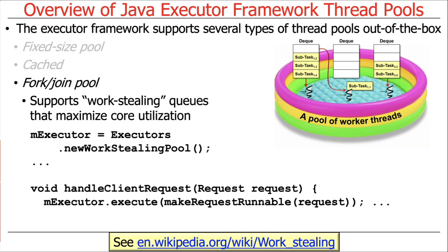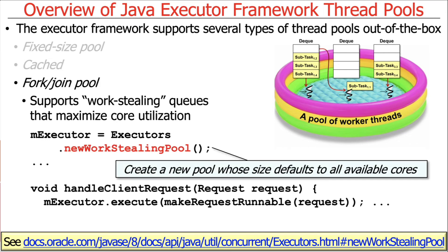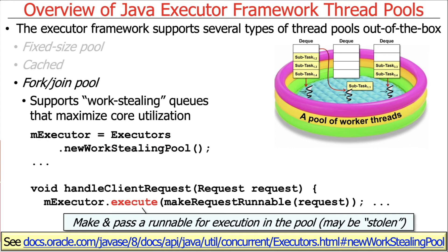The third type of thread pool is by far the most sophisticated — I'll give you a Cliff Notes version now and cover it more later. This is the so-called fork-join pool, which supports work-stealing queues that maximize core utilization. You use the Executors factory method called NewWorkStealingPool, which creates a pool whose size defaults to all available cores. Requests are then queued for execution in the thread pool.